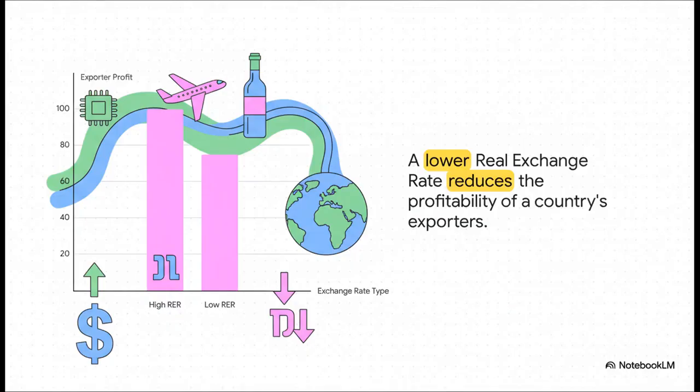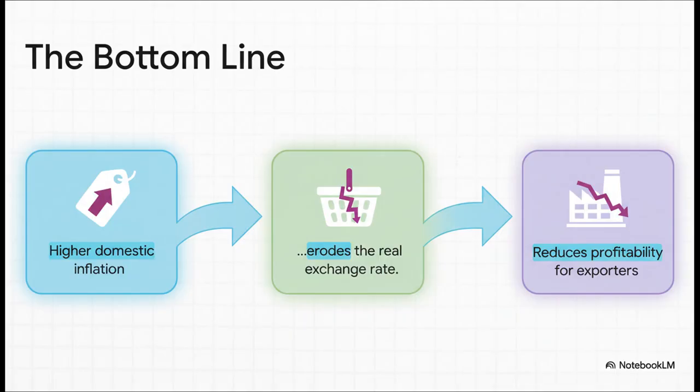This is a huge deal for a country's exporters. Think about an Israeli company selling its products in the U.S. for dollars. When the real exchange rate is high, they bring those dollars back home, convert them, and make a healthy profit. But when that real rate erodes, like in our example, those same dollars now buy them fewer shekels in real terms. Their profits get squeezed, and suddenly they're less competitive on the world stage. So let's boil this down — it's a clear chain reaction: higher domestic inflation causes the real exchange rate to erode, and the real-world consequence is that it directly hurts the profitability of that country's own exporters.